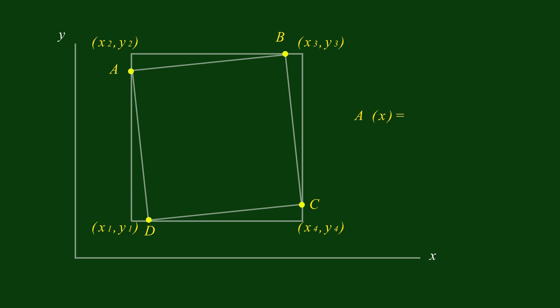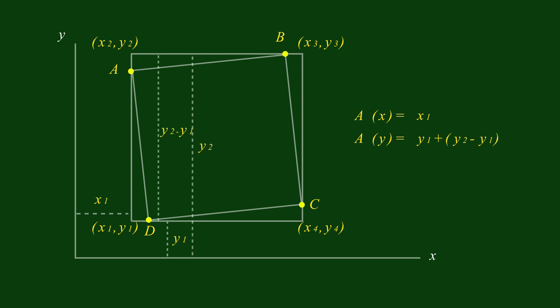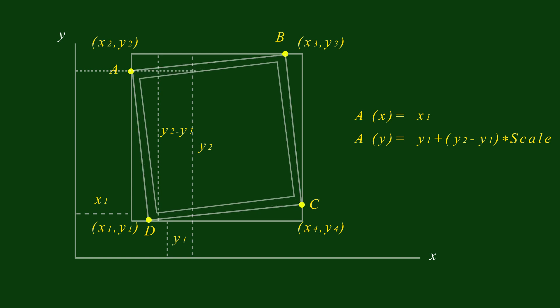Next, let us find the coordinate values related to the original square coordinate values. The X value for point A will be X1. The Y position value will be Y1 plus (Y2 minus Y1) multiplied with the scale down value. The same method can be used to find the other three corners' X and Y positions. The next square will be the same — scale down and rotate. Let us continue the same process in the Excel sheet.